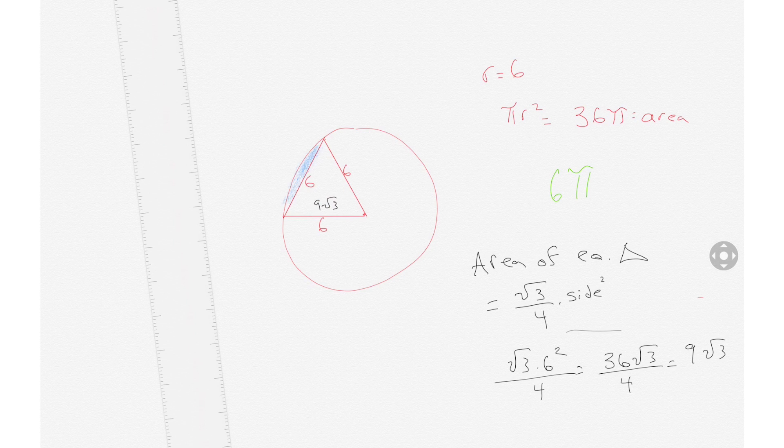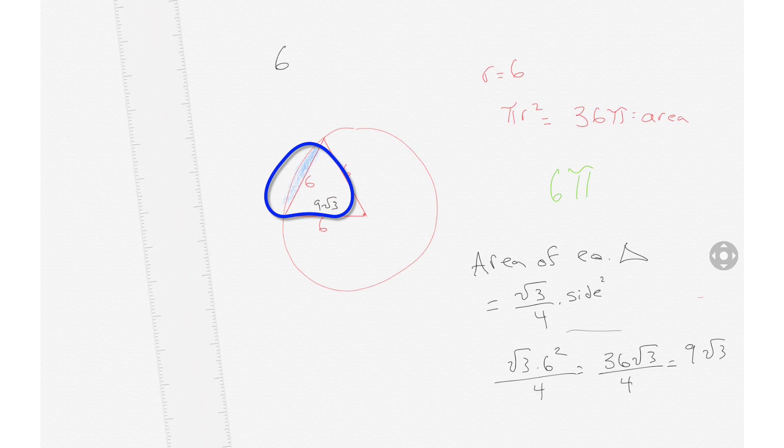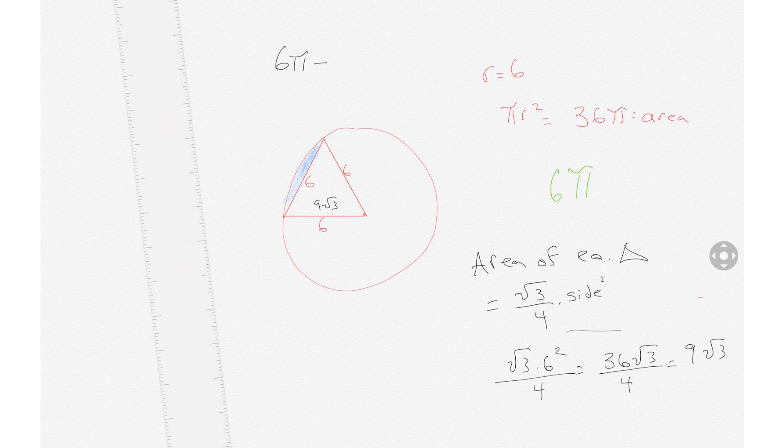To calculate the area of that shaded area, we would take the area of the circle section, which is 6 pi, and we would then subtract it by the area of the equilateral triangle.